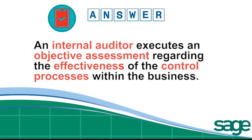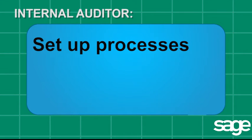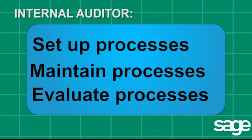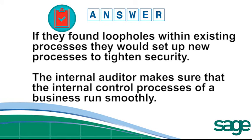An internal auditor executes an objective assessment regarding the effectiveness of the control processes within the business. They would be instrumental in setting up processes, maintaining these processes and continuously evaluating them. If they found loopholes within the existing processes, they would set up new processes to tighten security. The internal auditor makes sure that the internal control processes of a business run smoothly.